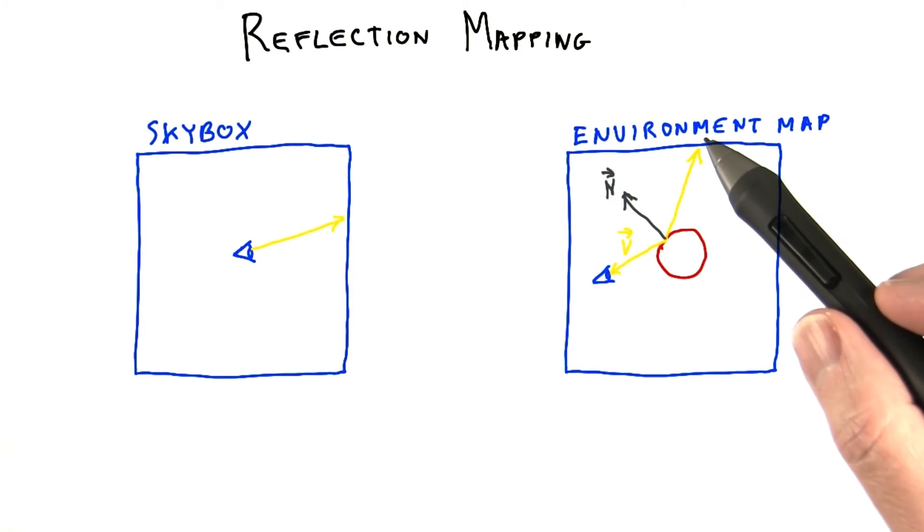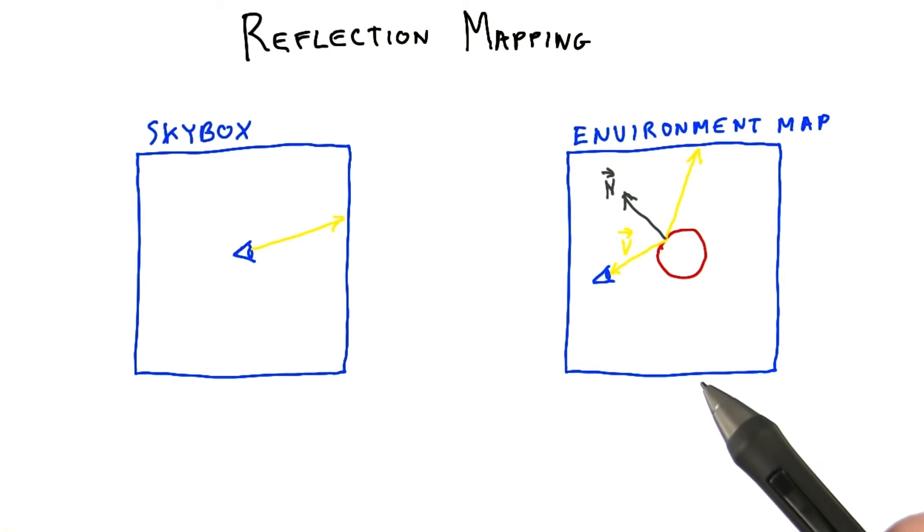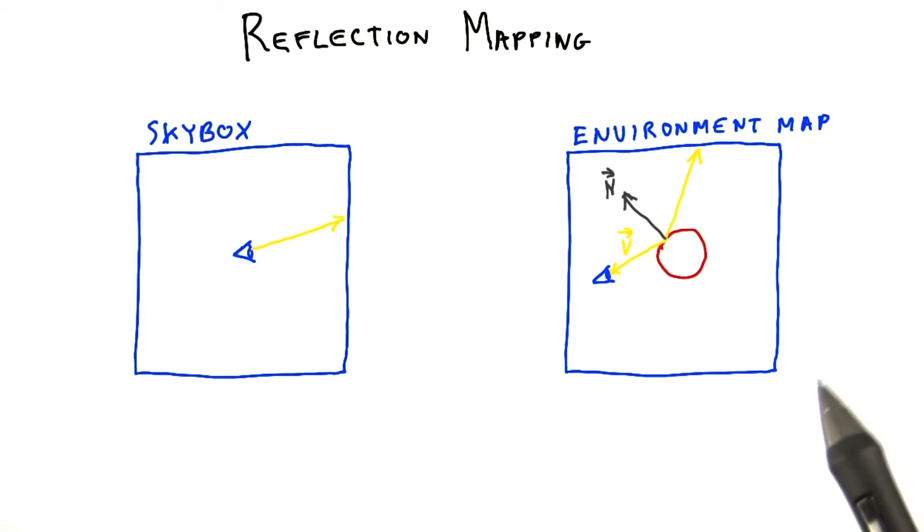The color from the reflection map makes the surface appear mirror-like. The very simplest cube map to reflect is one that's at infinity.